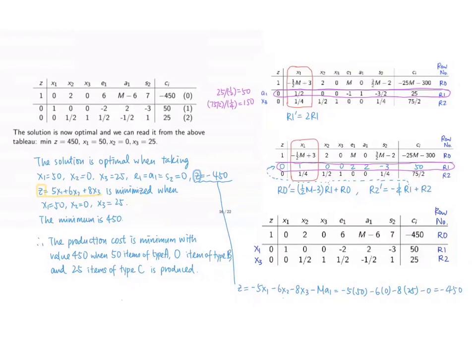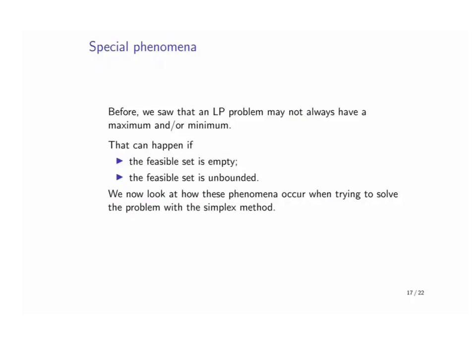Observe that the slack variable is 0. It means that when we achieve this minimum production cost, we just managed to produce the paper in exactly 150 hours, and we didn't finish this production earlier. There is no unused time remained.